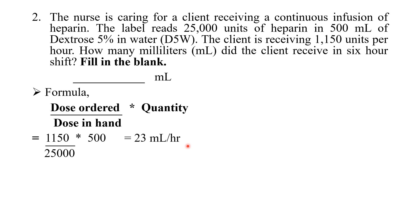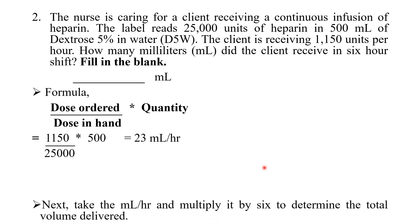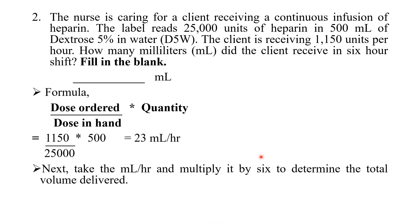But the question asks for the total mL received in six hours. In one hour the client receives 23 mL, so in six hours: 6 × 23 = 138 mL. During a six-hour shift, the client will receive 138 mL of heparin in total. The answer is 138.